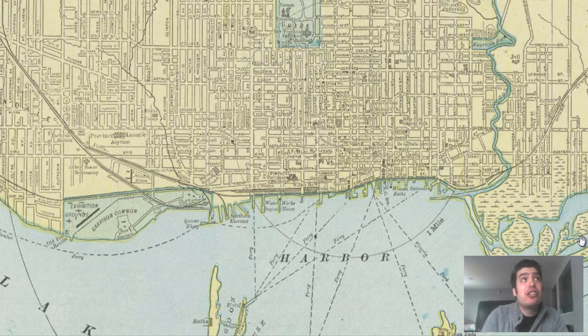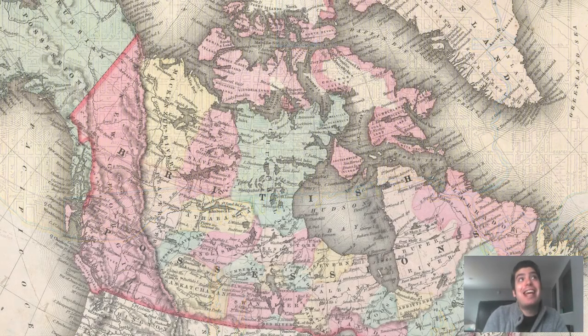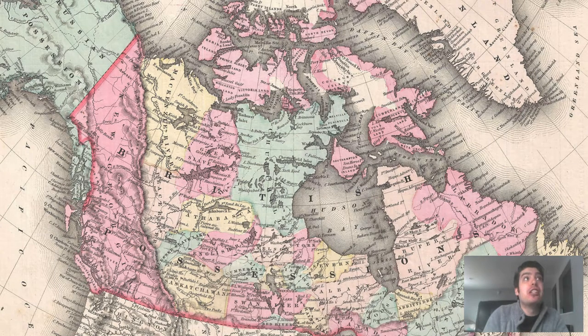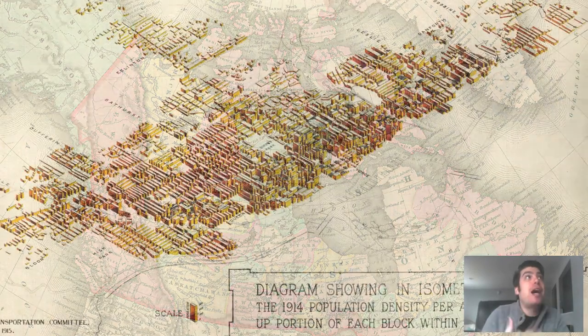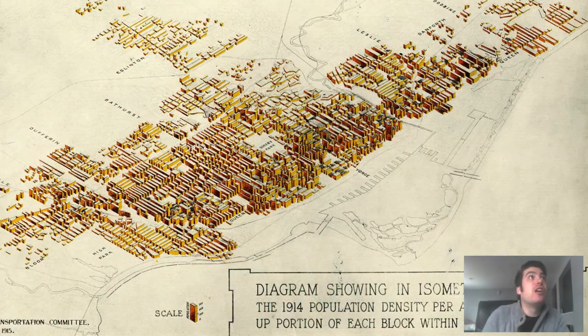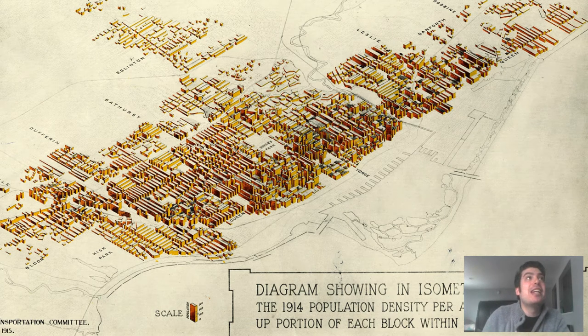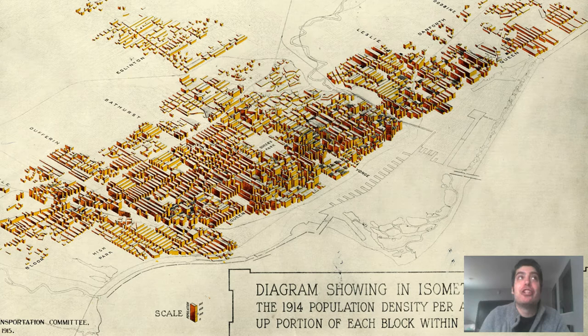Toronto is currently the most populous city in Canada and the provincial capital of Ontario. It has a population of roughly 2,700,000 and is one of the most populous cities in North America after Mexico City, New York, and Los Angeles.